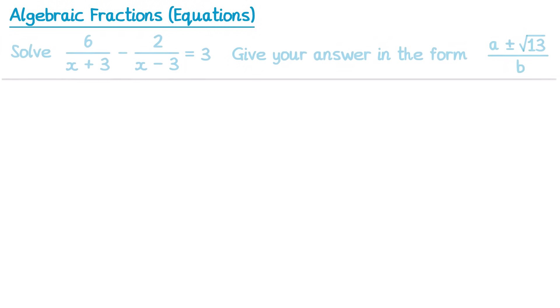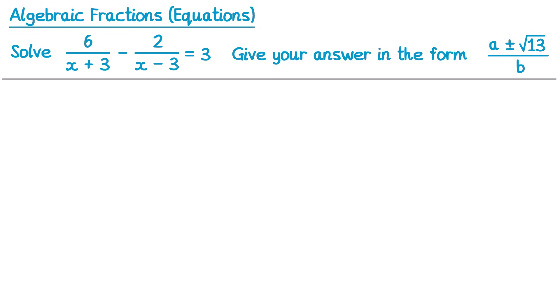Now let's have a look at an even trickier question. For this one we need to solve an equation, but we're told we need to give the answer in a particular form: a plus or minus square root 13 over b. This is a clear indication that when we get to a quadratic at the end, it's not going to factorise — we either need to use the quadratic formula or complete the square to get the solutions. So let's go ahead and try to solve this one. First of all we'll look at those denominators, and we can see we've got x plus 3 and x minus 3, so the product of those will become our denominator.